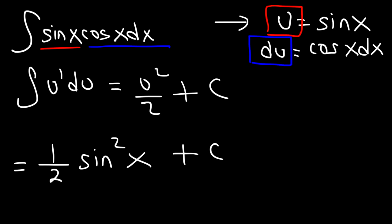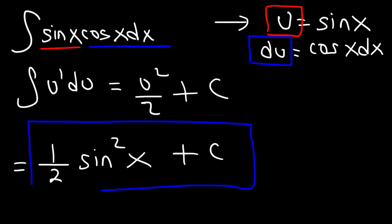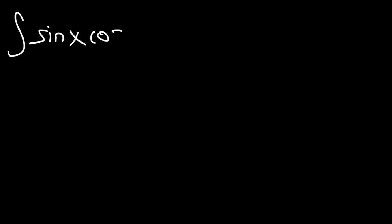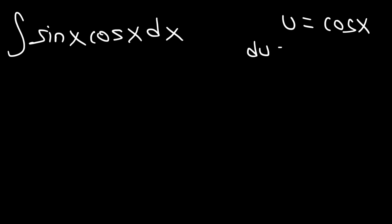So this is just one of the three ways in which we can represent the answer. Here's the second way. Let's start back with the original problem, but instead of making u equal to sine, let's make u equal to cosine x. du is going to be the derivative of cosine, which is negative sine x dx.